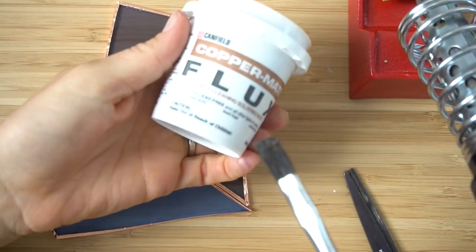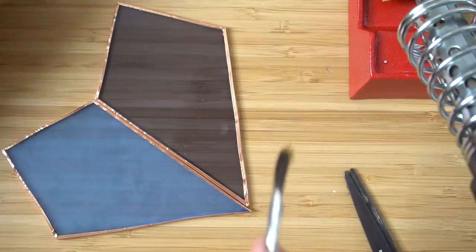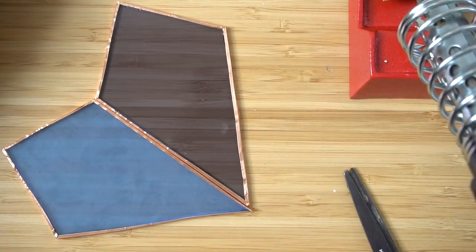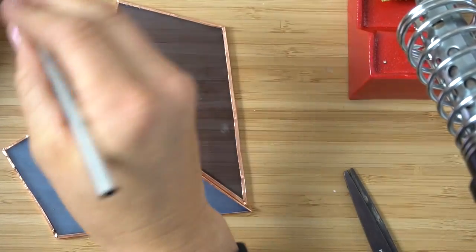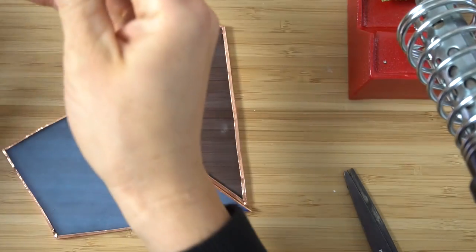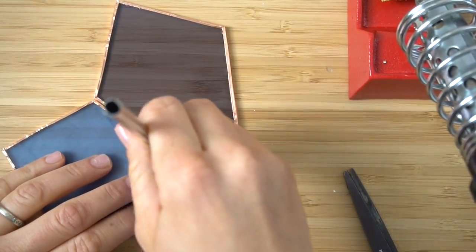Grab your flux and your paintbrush. Get a little bit on there. Make sure your iron is plugged in because it needs to be hot when we start. You just want to lightly brush it on the copper foil.